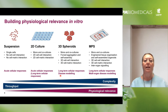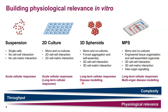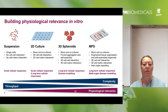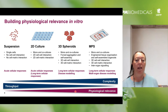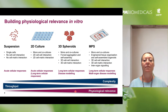When we build our in vitro models, we always have to weigh the throughput against the physiological relevance. Suspension of cells can be quite high throughput but have a lower physiological relevance. On the other end of the scale, we have the MPS systems — microphysiological systems — and close to them we have the 3D liver spheroids. These spheroids can be mono or co-cultures of different cell types, with important cell-cell and cell-matrix interactions, which make this model suitable for long-term cellular response and also for disease modeling.